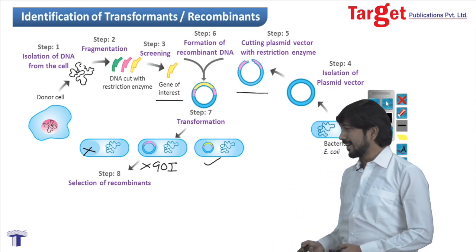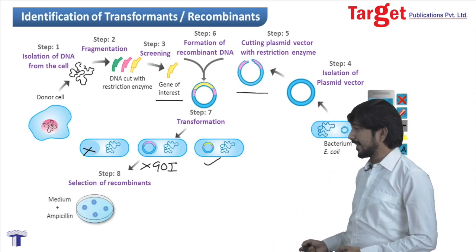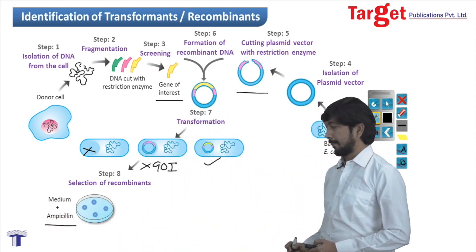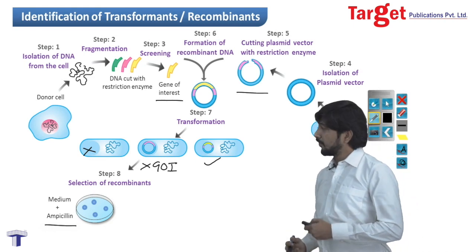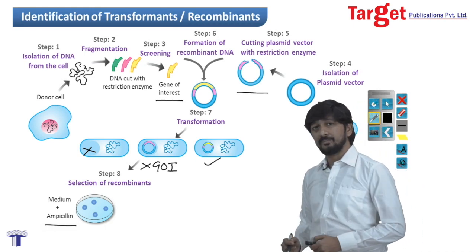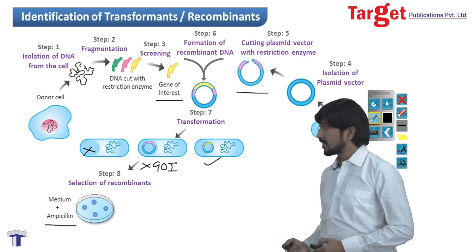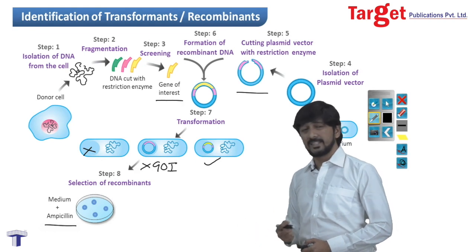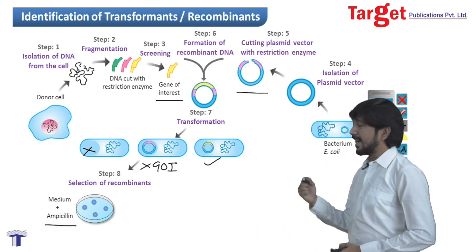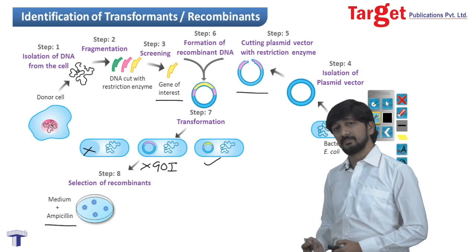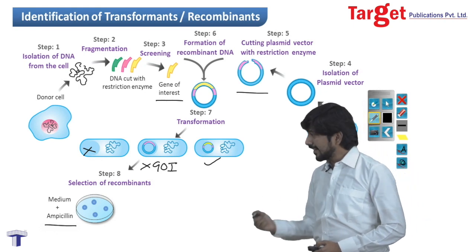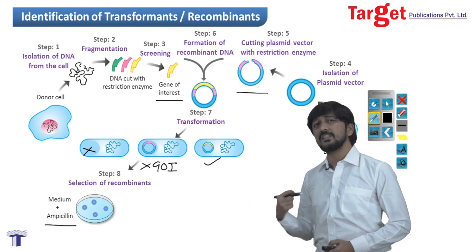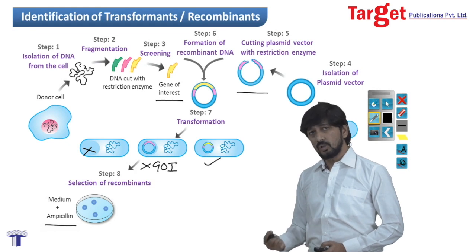In the identification step, we grow bacterial cells on a medium containing ampicillin. The first type of cells won't grow on this medium because they do not contain any plasmid providing resistance against ampicillin. The second and third types of cells would grow on this medium because they contain the ampicillin resistance gene. But the question remains: how to differentiate between these two cell types?